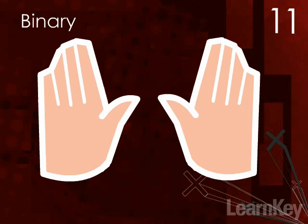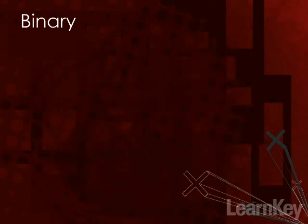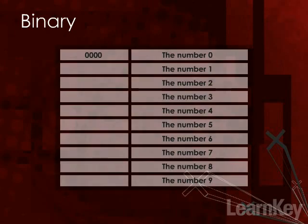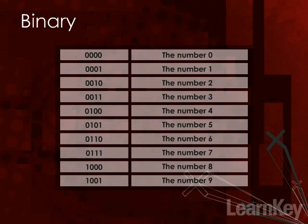Zero in binary is the same as zero in base ten. One in binary is the same as one in base ten. But now we're going to count to two — the problem is in binary we don't have the number two, so instead of saying two, we have to say one and then zero. To count to three, it's one one. To four, it's one zero zero. To five, it's one zero one. Six, seven, eight, nine, ten — I can keep counting all day like this. In a binary world, this is how your computer looks at numbers like the number five.